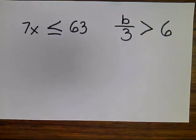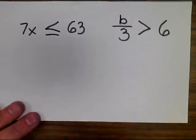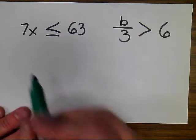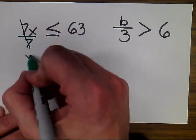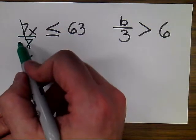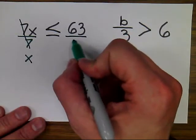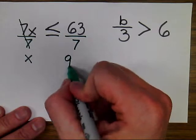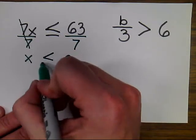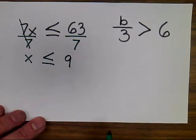So here I've got both a multiplication and a division inequality, and I'm going to solve each of them using the property of inequality. Here I'm going to isolate my variable x by dividing 7x by 7. That leaves me with just x. Because I divided this side of the inequality by 7, I'm going to divide this side by 7 because of the property of inequality, leaving me with an answer of 9. I bring down my symbol and it tells me x is less than or equal to 9.